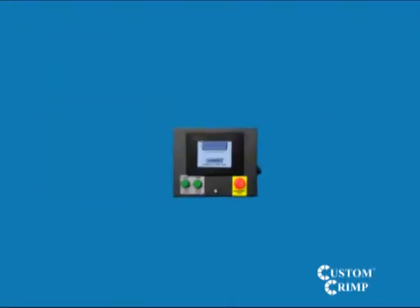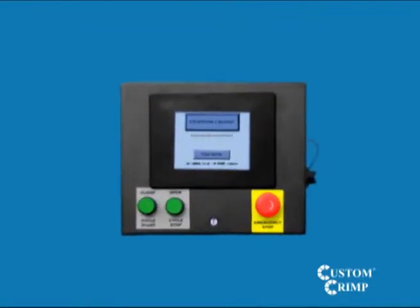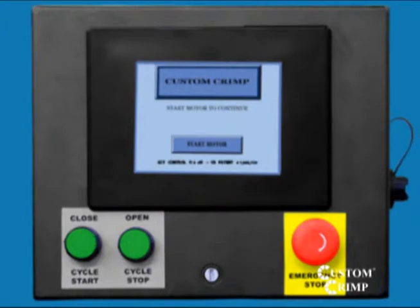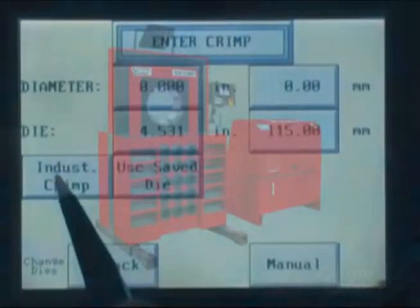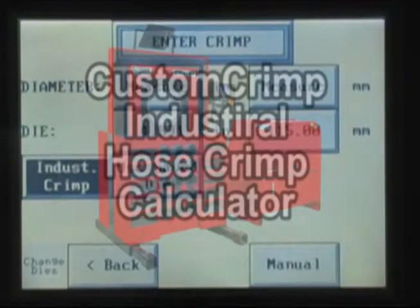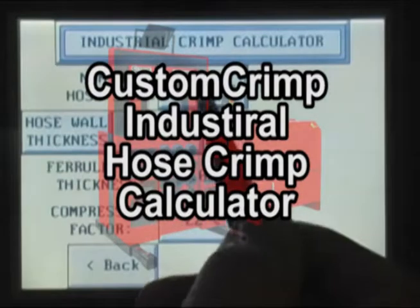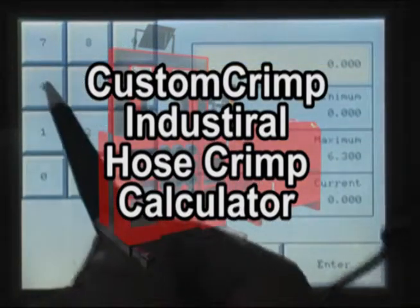The ACT, or Automatic Crimp Technology Controller, is a patented controller available on crimpers from Custom Crimp with many outstanding and easy-to-use features. The Industrial Hose Crimp Calculator is part of the ACT Controller's software package on Custom Crimp crimpers capable of crimping industrial hoses.